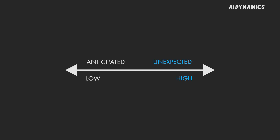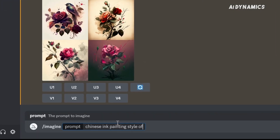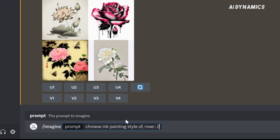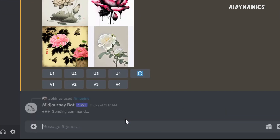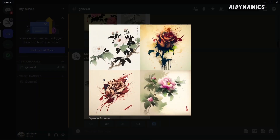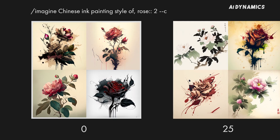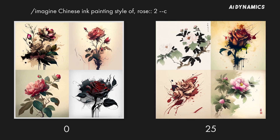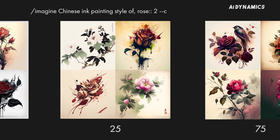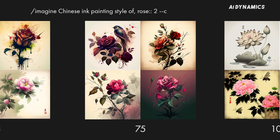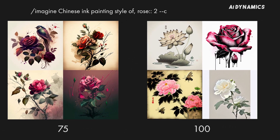The chaos parameter affects how varied the initial image grid results are. Higher chaos values result in more unexpected results compared to low chaos values. It accepts values from 0 to 100; the default is 0. Imagine Chinese ink painting style of rose — fair enough. Now let's increase the chaos a bit. This time we got a white rose too, and the pink one doesn't quite look like a Chinese ink painting. Here are a few images with different chaos values: 0, 25, 75, and 100. This parameter is great if you are prototyping your design or just want to get some general ideas.